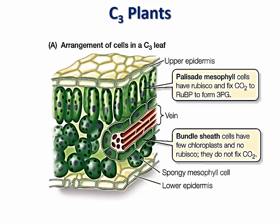C3 plants keep their stomata open during the day and close them at night in order to minimize water loss. On hot days, however, stomata of C3 plants close to prevent water loss. This causes oxygen to build up inside the leaves and photorespiration to occur. If C3 plants are exposed to prolonged duration of hot temperatures or dry conditions, photosynthesis remains low and photorespiration high, causing the plants to suffer and die.